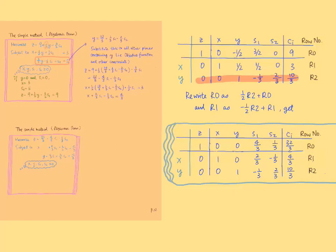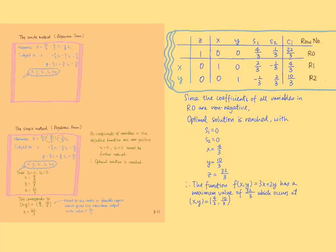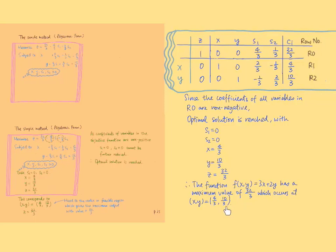We get the third system. In this system, there is no longer any negative coefficient for any variable in row 0, the objective function. Taking s1 equals 0, s2 equals 0, x equals 4 over 3, y equals 10 over 3, and z equals 32 over 3, we cannot further increase z. Therefore, the optimal solution is reached with these values. For our original problem, the objective function f equals 3x plus 2y has a maximum value of 32 over 3, achieved by taking x equals 4 over 3 and y equals 10 over 3.